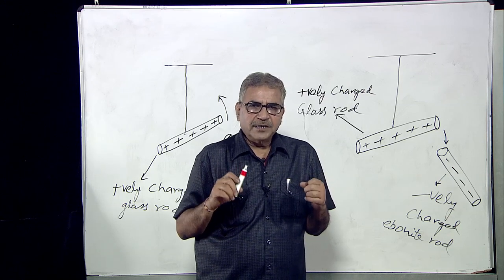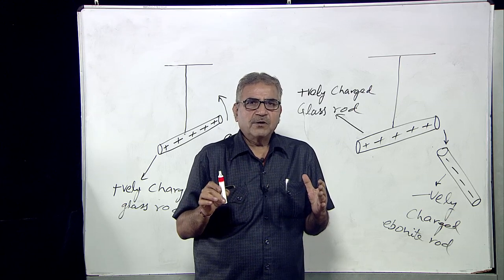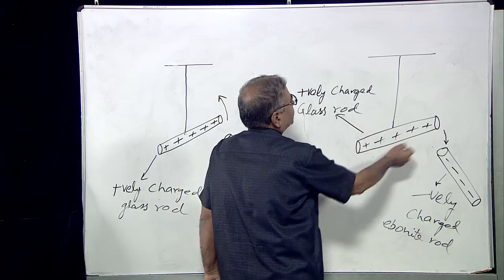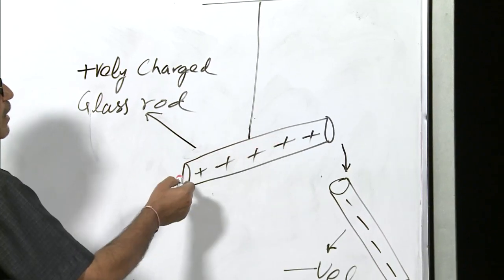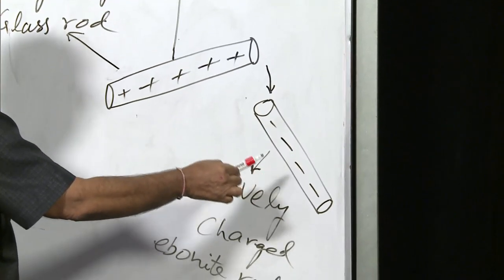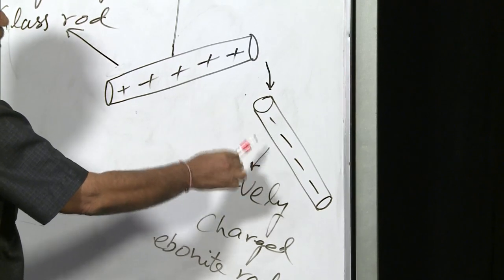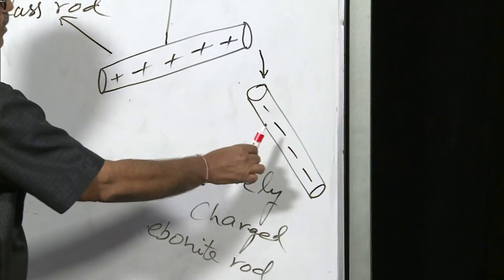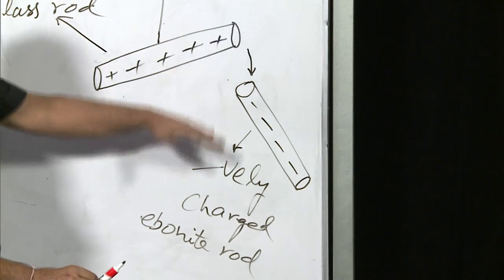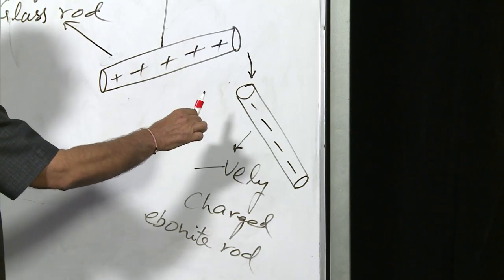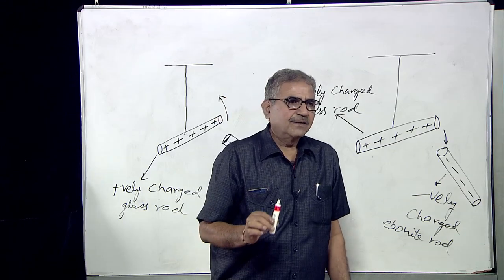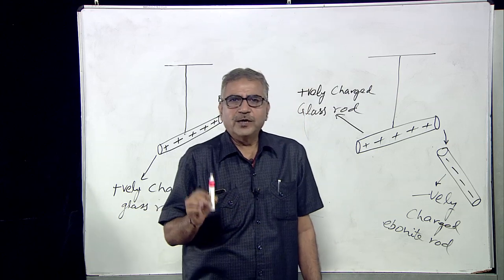Now we will understand through a figure that unlike charges attract each other. We have a positively charged glass rod rubbed with silk suspended here. We bring near it an ebonite rod that has been rubbed with wool and has become negatively charged. The glass rod moves towards the ebonite rod because both rods have opposite charges. This demonstrates that unlike charges attract each other.